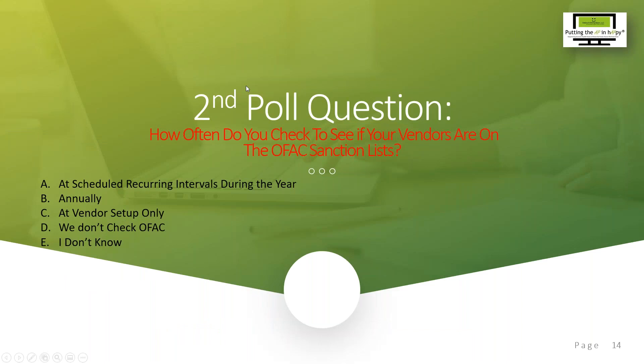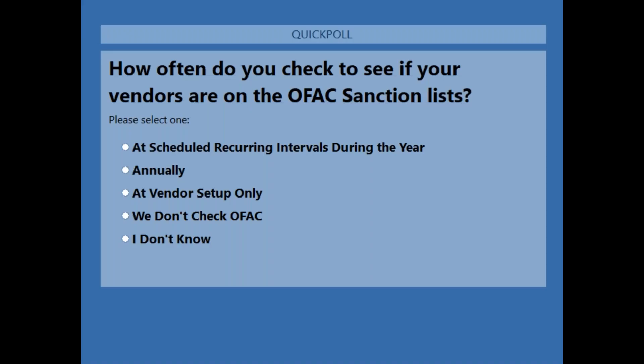Now we're at the second poll question: How often do you check to see if your vendors are on the OFAC sanction list? The options are: at regularly scheduled recurring intervals during the year; annually; at vendor setup only; we don't check OFAC; or I don't know.